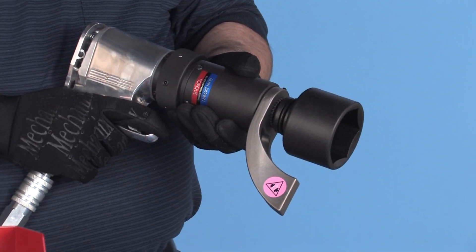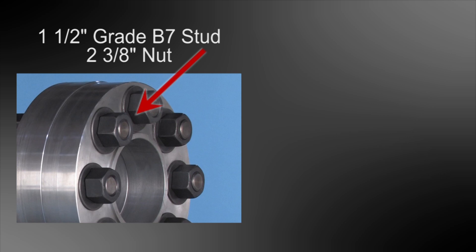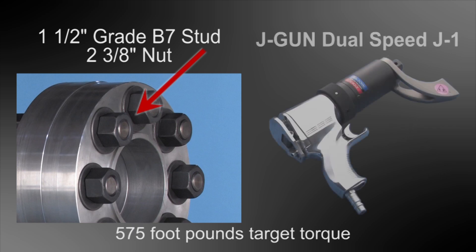Now let's put the system to work. Let's suppose that the job at hand is to tighten these 1 1/2 inch studs with 2 3/8 inch nuts to 575 foot-pounds of torque using the dual-speed J1.